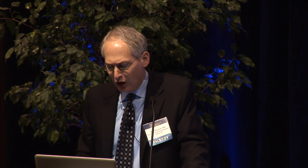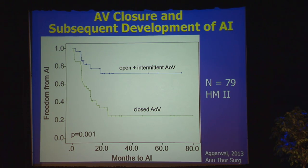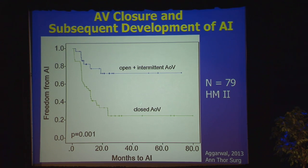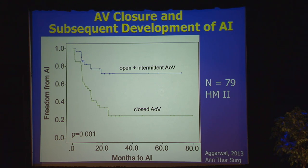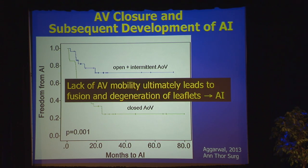Another complication that has emerged — perhaps not anticipated — is development of aortic insufficiency. What is shown here is the risk of developing aortic insufficiency comparing LVAD patients: those where the aortic valve opened all the time or intermittently, versus patients where the aortic valve stays closed because all the blood is going through the LVAD. Those patients whose aortic valve stayed closed all the time were at higher risk of developing aortic insufficiency. As the aortic valve stays closed, the valve leaflets start to fuse and degenerate, resulting in aortic insufficiency.